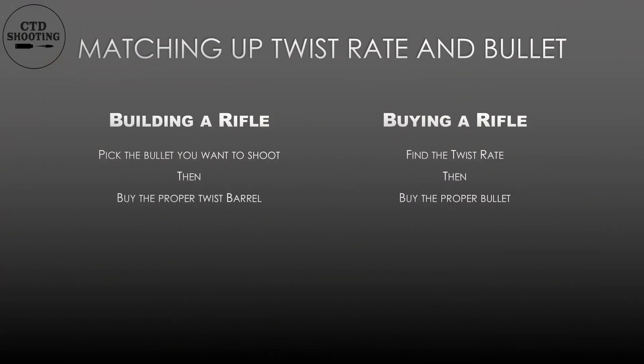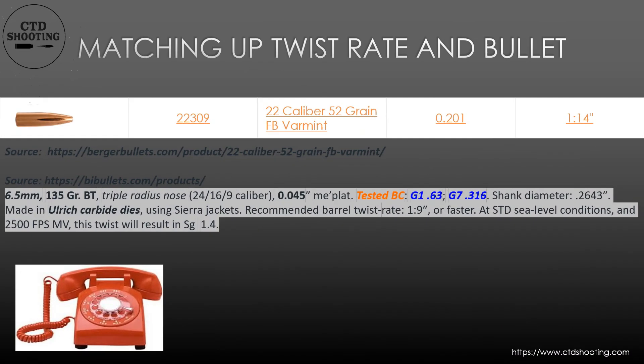Alright, so we know why we need to find the twist rate. We know how to find the twist rate. But how do we match the bullet up with the twist rate? There are two main scenarios that you will face. If you are building a rifle, you almost always pick the bullet you want to shoot first, then buy the proper twist barrel. If you are buying a rifle, you will have to find the twist rate of your barrel, then match up the proper bullet. Either way, the good news is many bullet manufacturers are listing the needed twist rate to stabilize their bullets. If you have any questions or any doubts, give them a call. Matching the bullet up with the twist rate is a foundational piece of the accuracy puzzle.